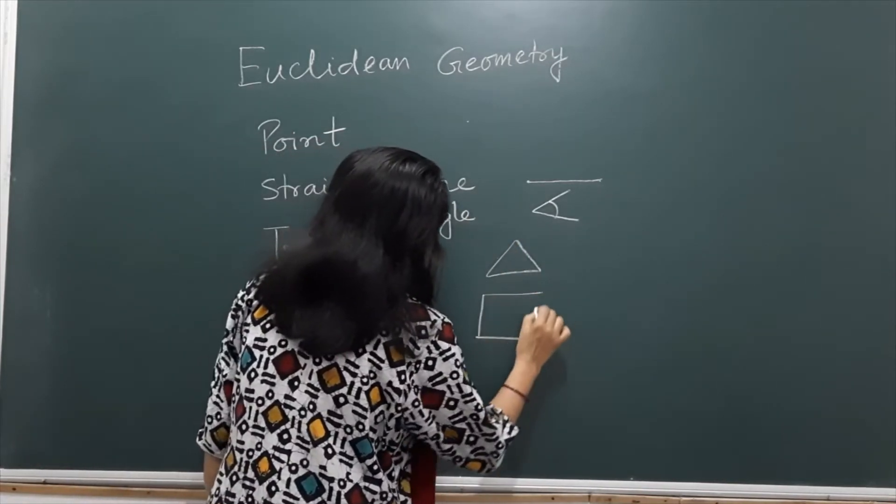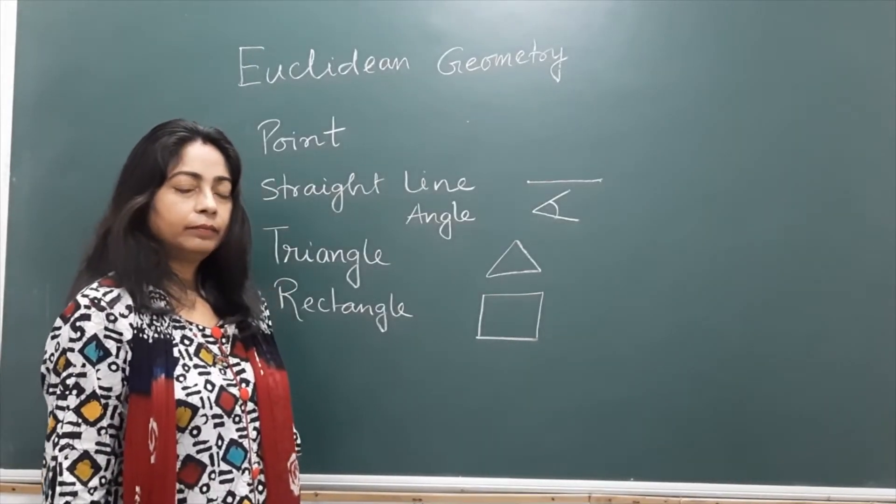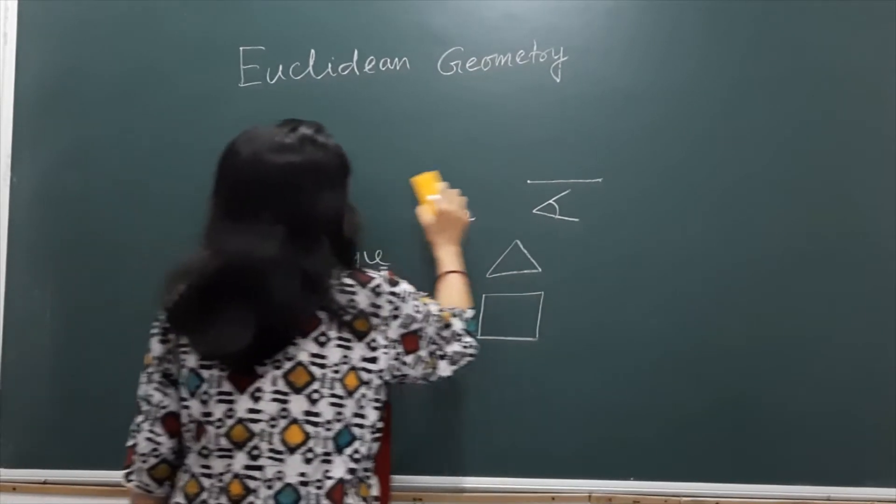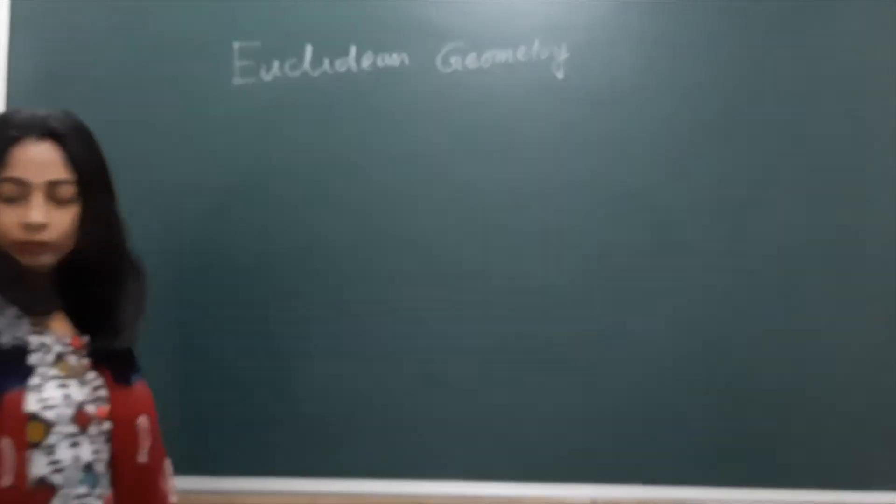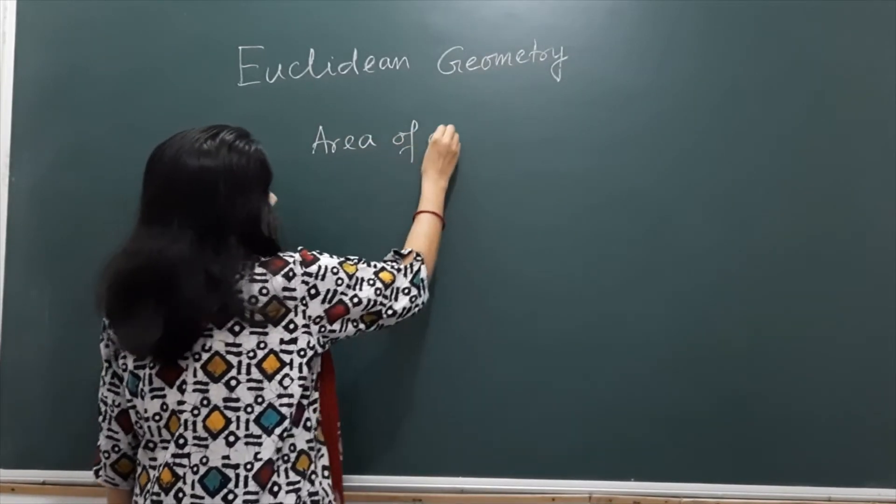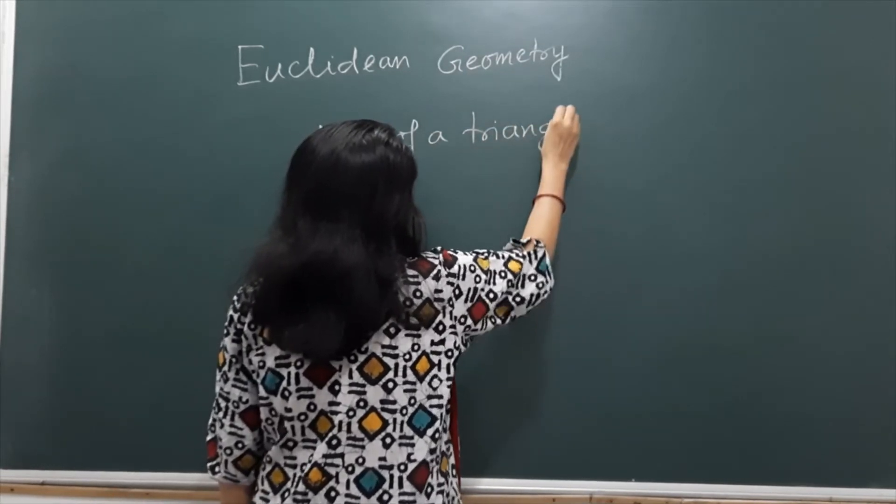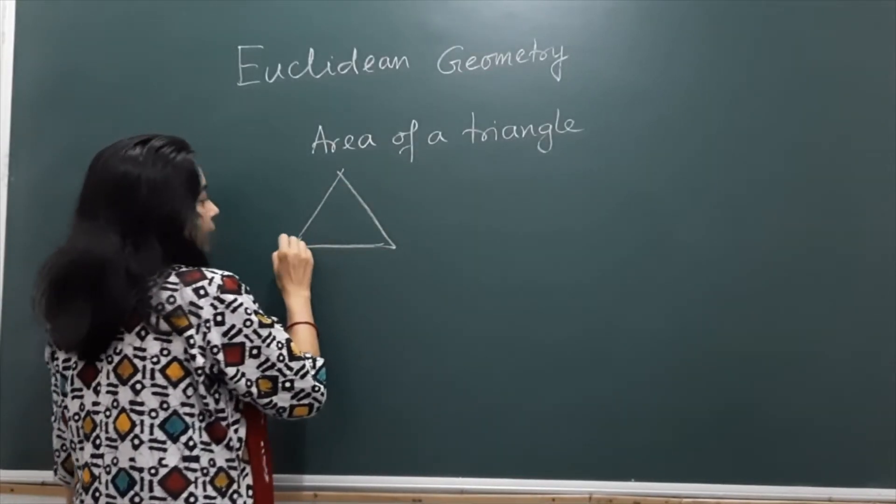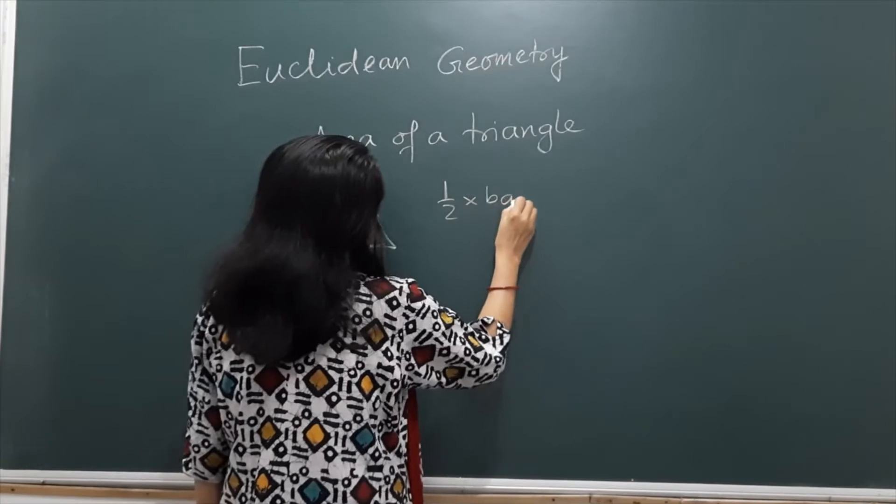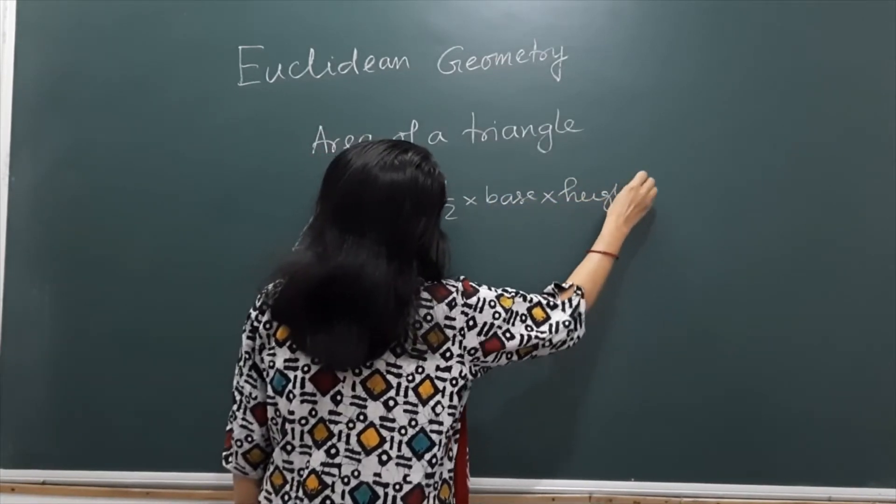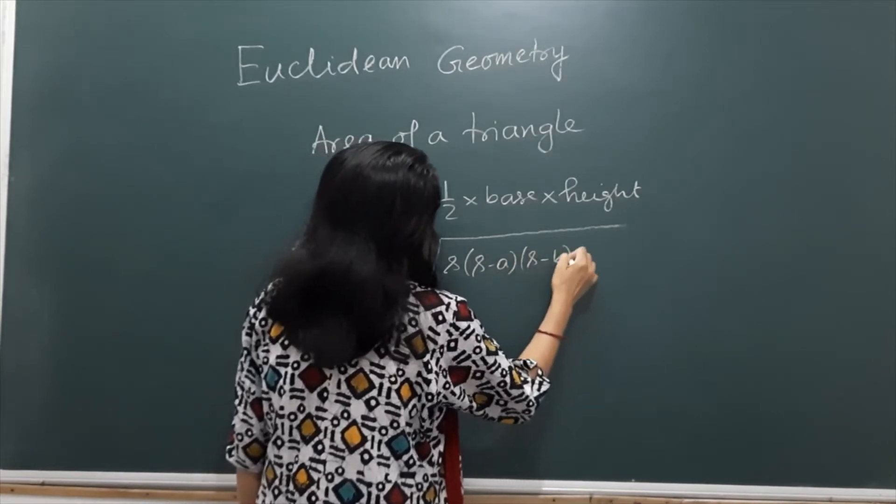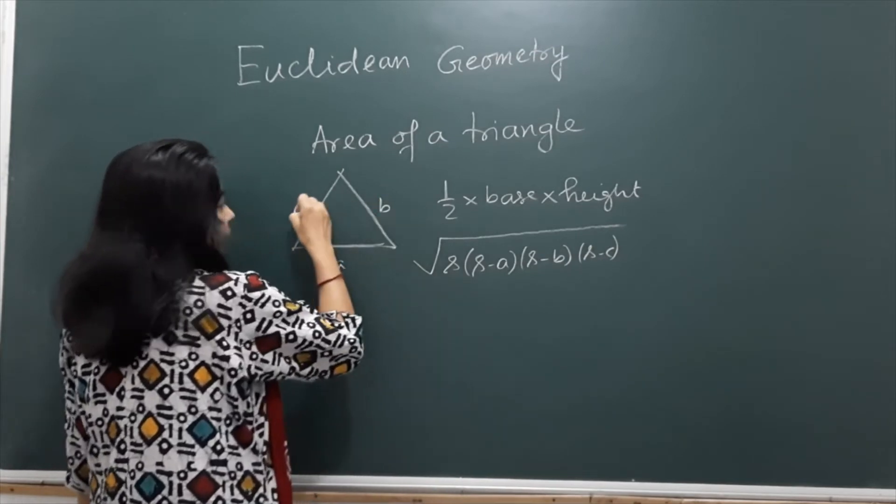Rectangle - four straight lines make a rectangle. Now if you would like to find the area of a triangle, several direct formulae you can use, like half into base into height, and then square root of s into s minus a, s minus b, s minus c, if a, b, c are the sides of the triangle.